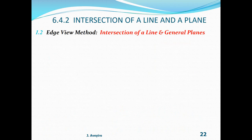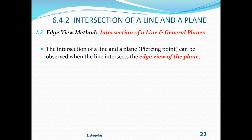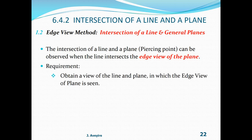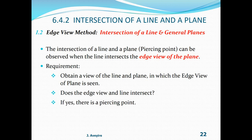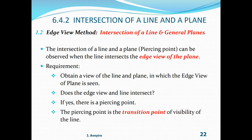Intersection of a line and general planes — the piercing point. For a general plane, the piercing point can be observed when the line intersects the edge view of the plane. This requires obtaining a view in which the edge view of the plane is seen. If the edge view and the line intersect, there is a piercing point; if not, there is no piercing point. The piercing point is the transition point of visibility of the line — on one side the line is visible, on the other it is not.